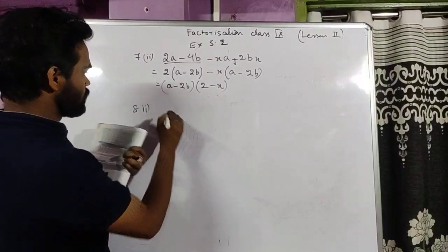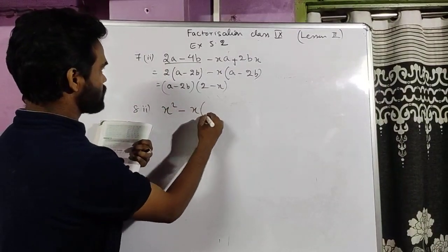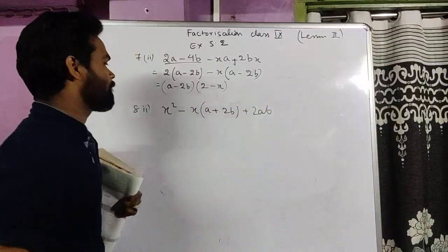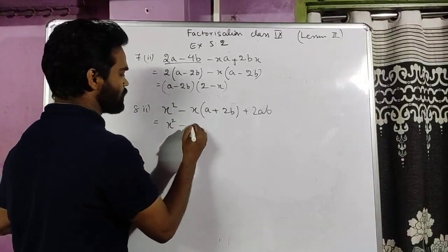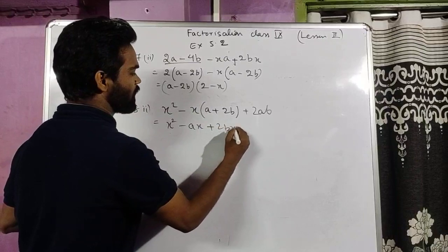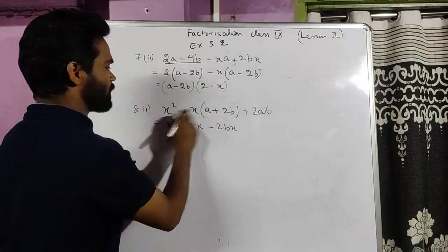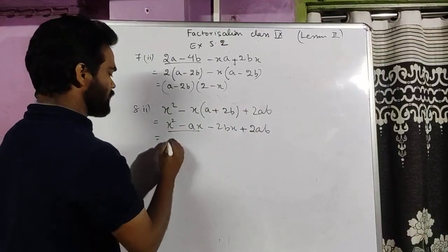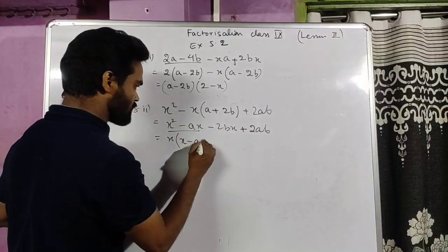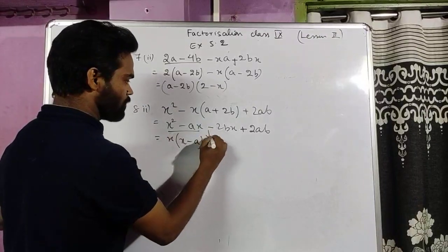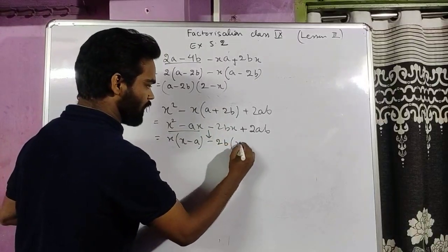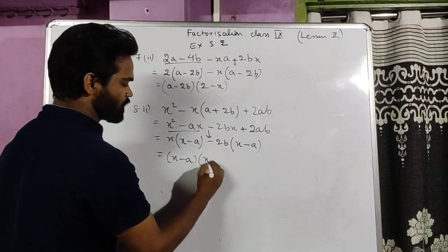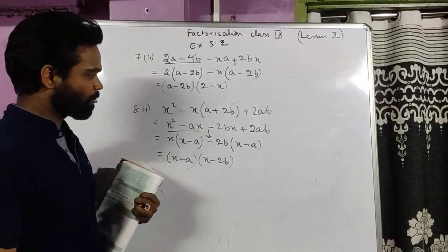Sum 8 part 2: x² minus x(a plus 2b) plus 2ab. First open the bracket: x² minus ax minus 2bx plus 2ab. Taking x as SCF from the first two: x(x minus a). Taking minus 2b common from the last two: minus 2b(x minus a) — the sign changes. Both expressions have (x minus a) as common, leaving (x minus 2b). Factorized: (x minus a)(x minus 2b).